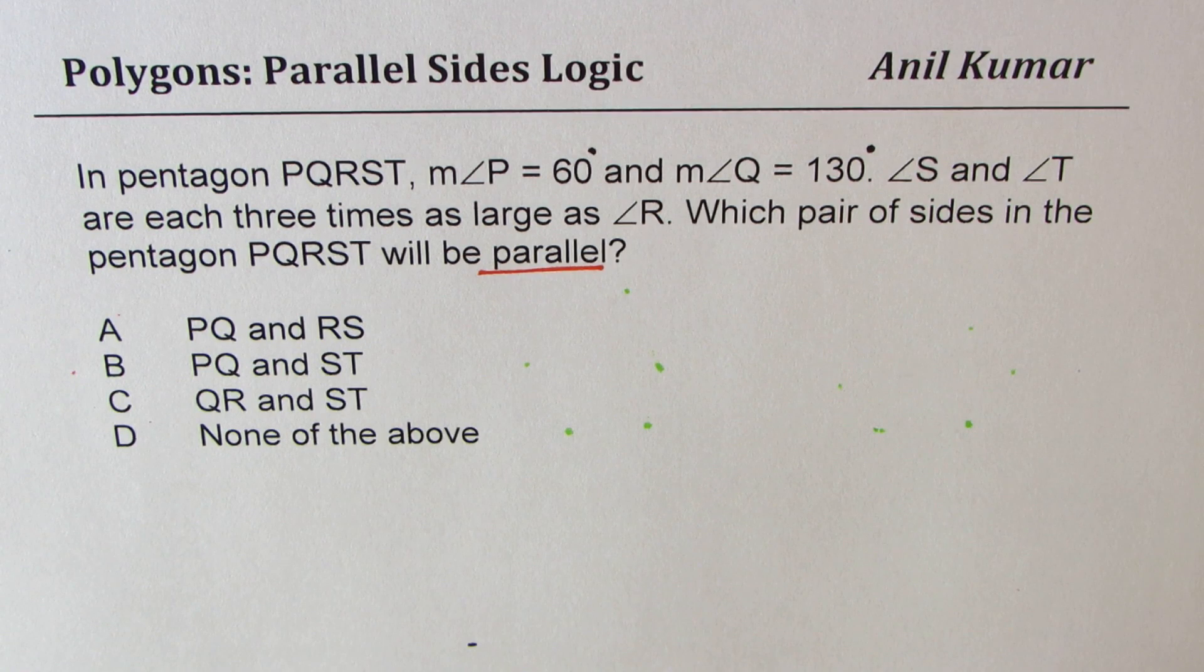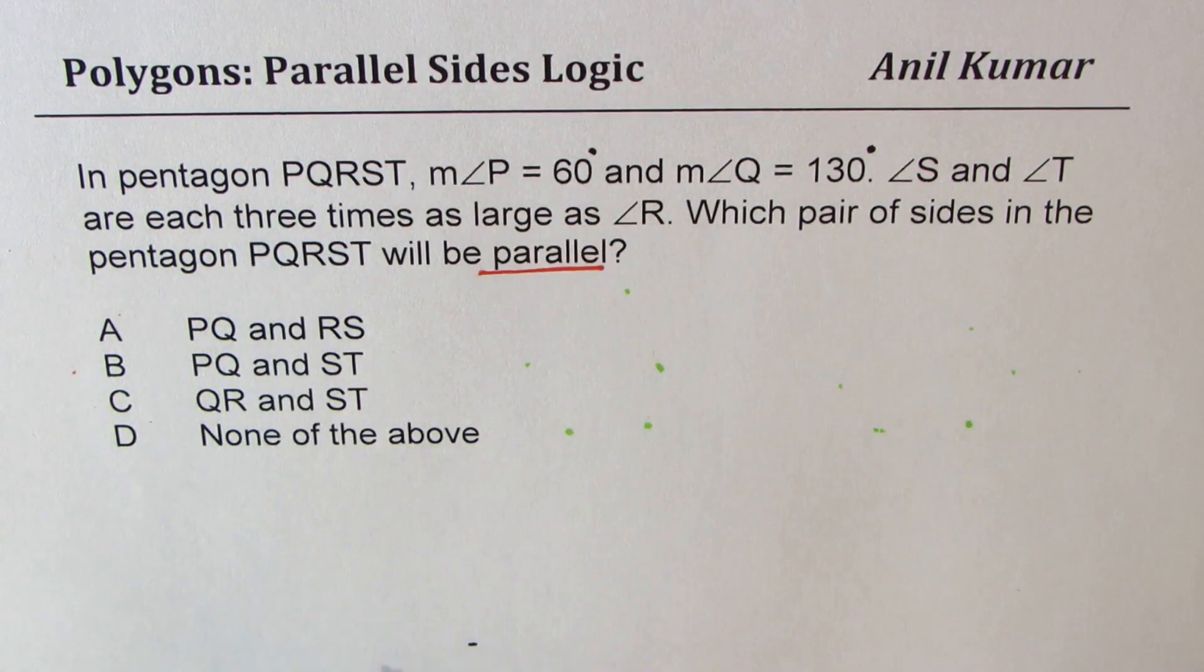Now how do we solve such a question? The idea here is to find the interior angles for the given polygon. Once we find that, it should be simpler for us to find out which two sides are parallel.